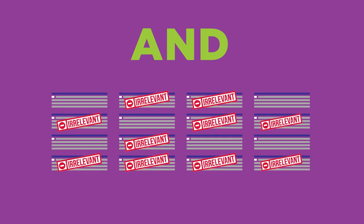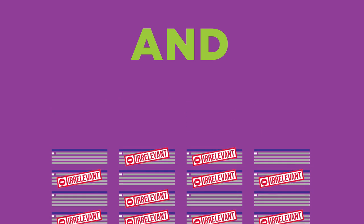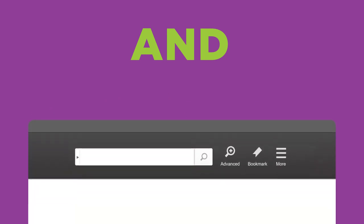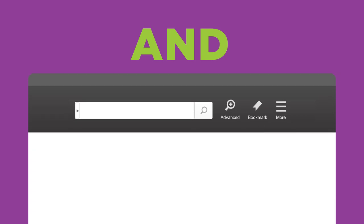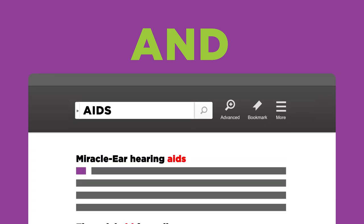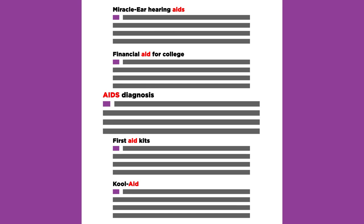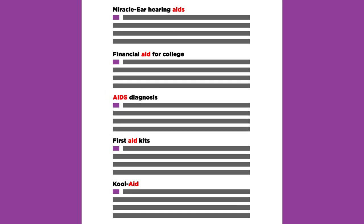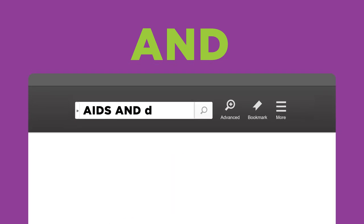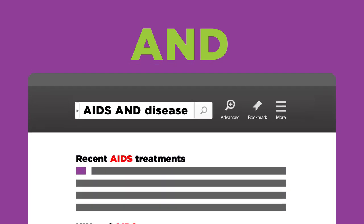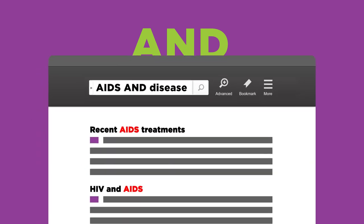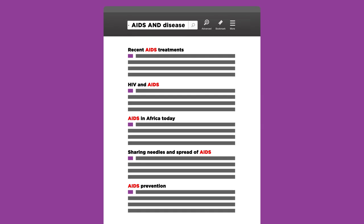Using the Boolean operator AND can also help you avoid getting results that have nothing to do with your topic. For example, let's say you need information about the disease AIDS. If you search for just the term AIDS, only one result may have anything to do with the disease. Now look what happens when you combine the operator AND with a second search term "disease" — this narrows your search results by clarifying what you're looking for, so your results only include information related to the disease of AIDS.